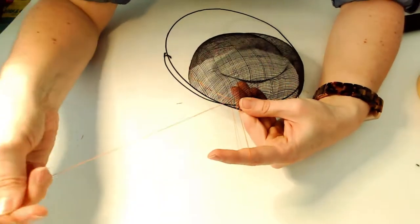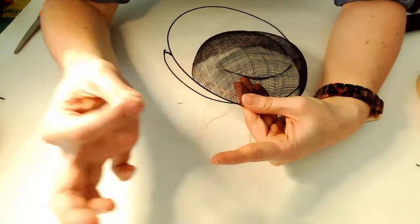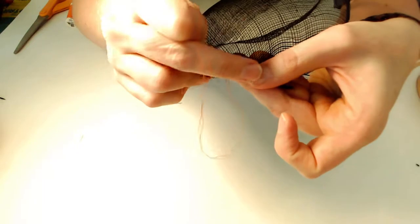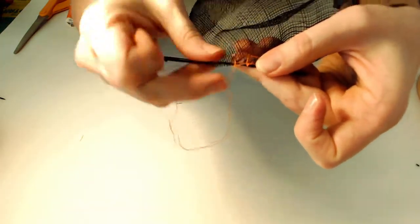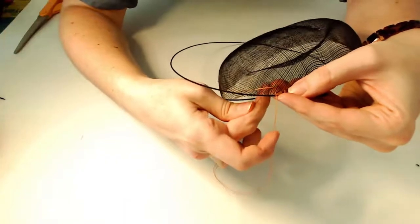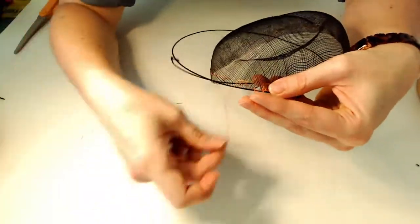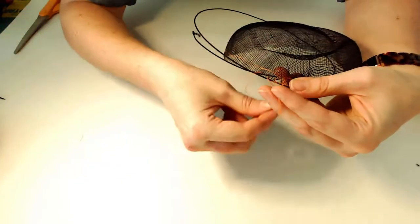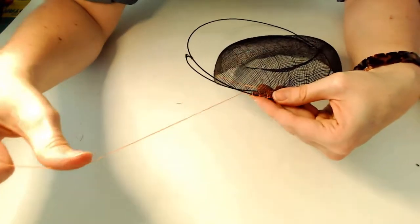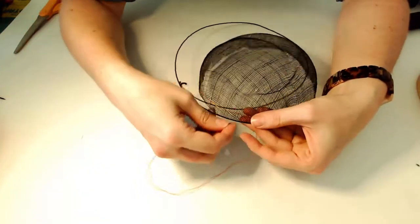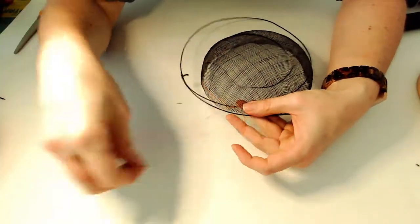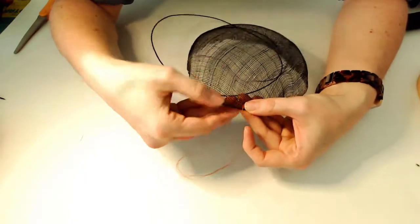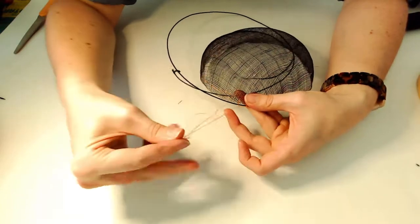So it kind of creates a line and then a straight across line and then another one down. Behind the loop. And try not to get too close to the edge of the sinamay because your thread will just pull through all the fibers. So you want to go down maybe a quarter of an inch into the fabric of the sinamay. And try not to pull too tight.